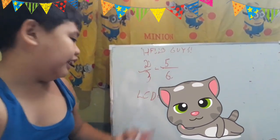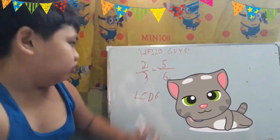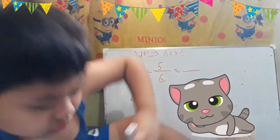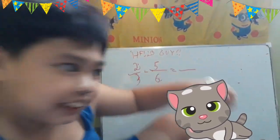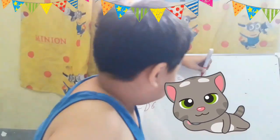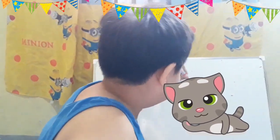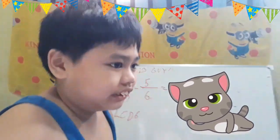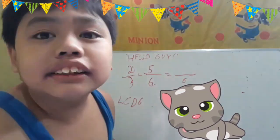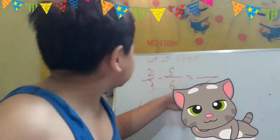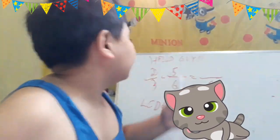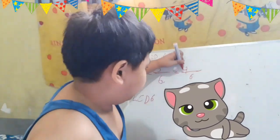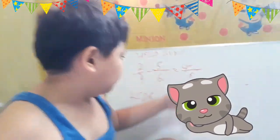The LCD is six. Six equals — so the LCD is six. Six times three. Six divide three is two. Two times — it's really close. Six times three.